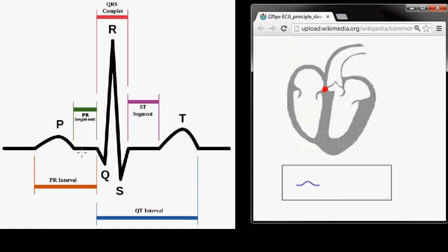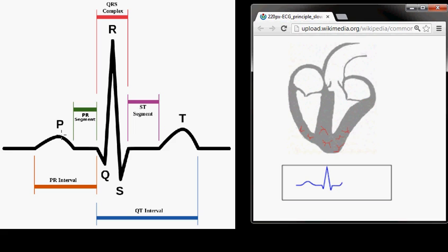Now on the left here, each one of these waves have been labeled. The first labeled wave is a P wave, which is the atrial depolarization and atrial contraction.